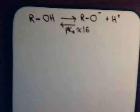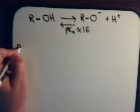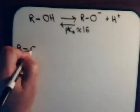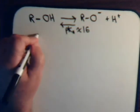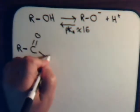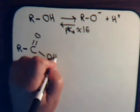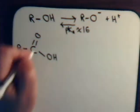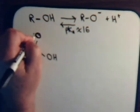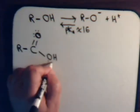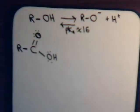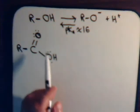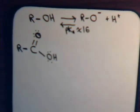Now let's compare and contrast to a generic carboxylic acid. The carbon with the double bond is going to be sp2 hybridized. Each of the oxygen atoms are also sp2 hybridized, but they're hybridized in different ways.